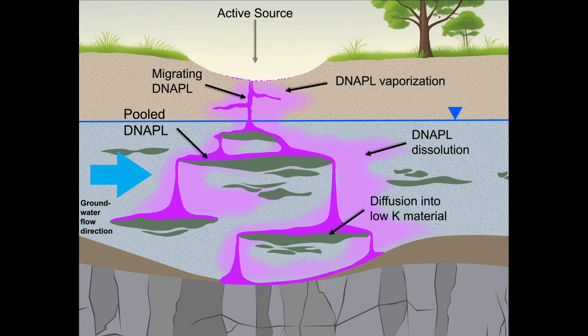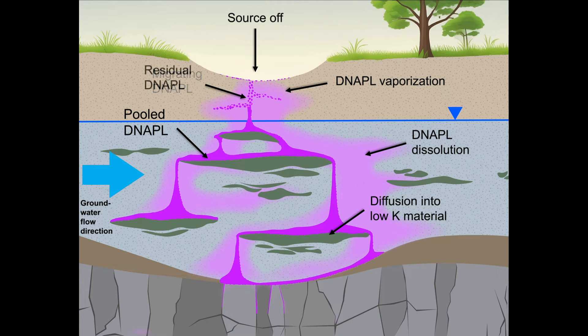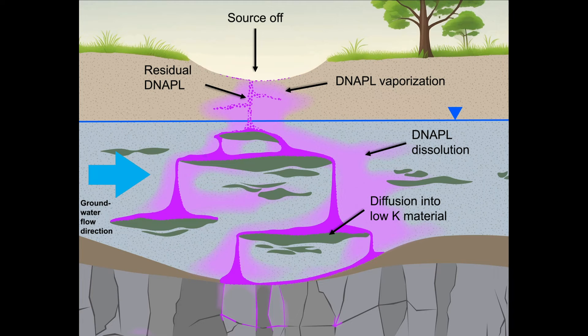Dissolved D-NAPL migrates with groundwater flow and can impact water wells. When D-NAPL encounters fractured bedrock, it migrates into the fractures and diffuses into the rock matrix.